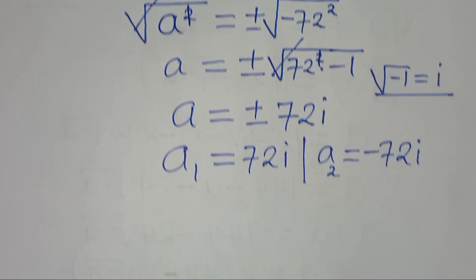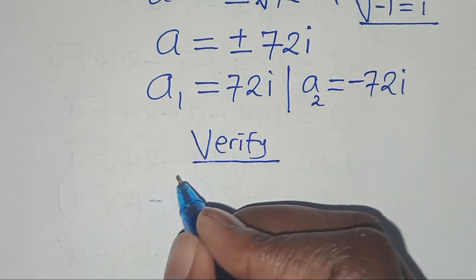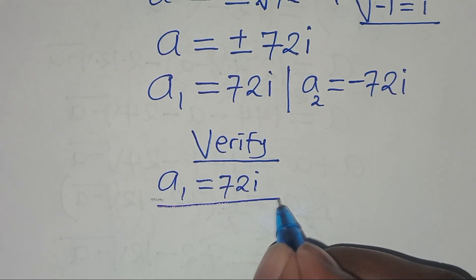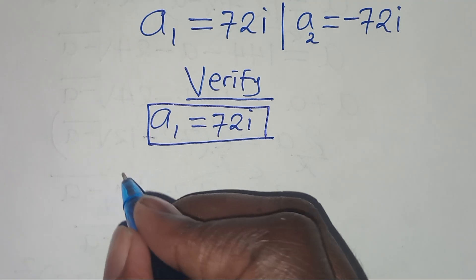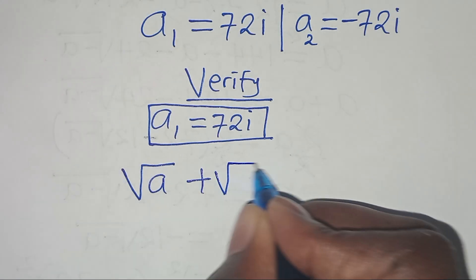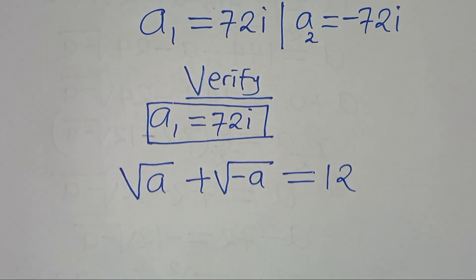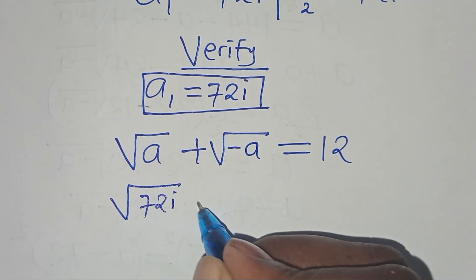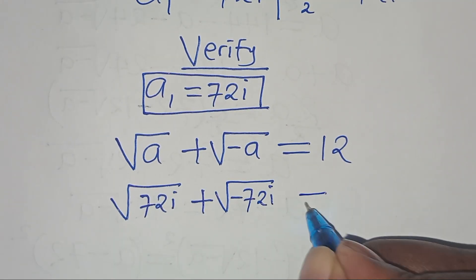The next step is to verify. Let's verify that a₁ = 72i satisfies the original equation: √a + √(−a) = 12. Substituting: √(72i) + √(−72i) = 12.